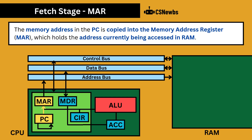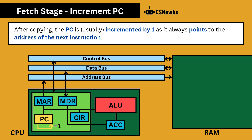The memory address in the program counter is copied into the memory address register, which holds the address currently being accessed in RAM. After copying, the program counter is usually incremented by 1, as it always points to the address of the next instruction.